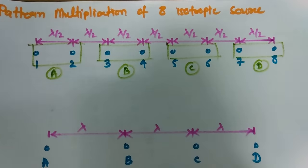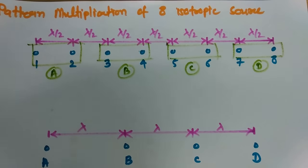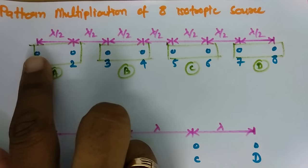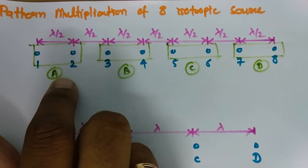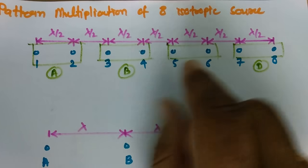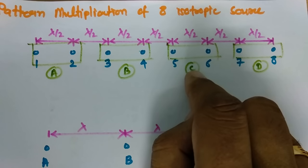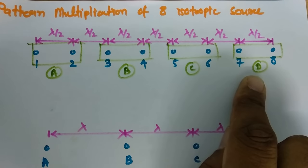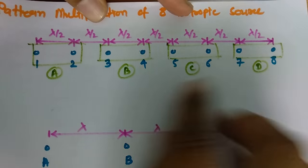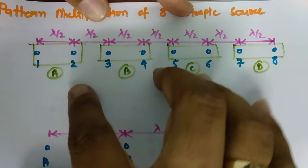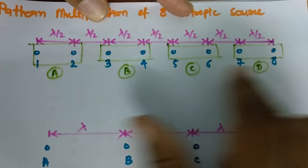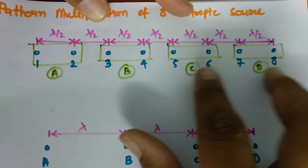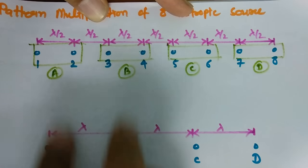So this is what I am considering first. Radiation pattern of group 1 and 2 is A, radiation pattern of group 3 and 4 is B, radiation pattern of group 5 and 6 is C, and radiation pattern of group 7 and 8 is D. Now if you see sources A, B, C, D as individual sources, then the distance between A-B, B-C and C-D changes to lambda.